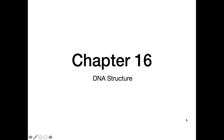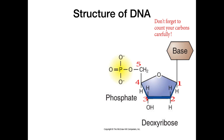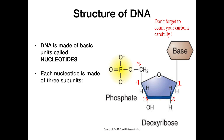This video is going to be about the structure of DNA. DNA is made up of basic units called nucleotides, and every nucleotide is going to have three basic subunits. The first of these subunits is our deoxyribose sugar, which we can see right here. We know this is the sugar because it has an oxygen atom incorporated into this ring structure, which is very characteristic of sugars.